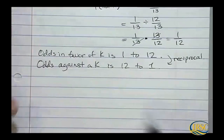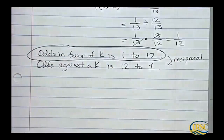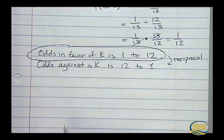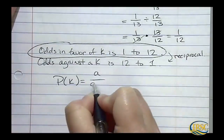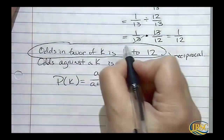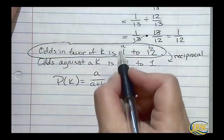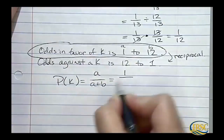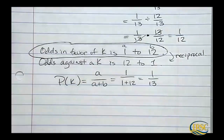We just learned that the odds in favor of a king was 1 to 12. We don't want the odds against — we want the odds in favor for this formula. So the probability of a king should be A over A plus B, where the first number is A and the second is B. That means 1 over 1 plus 12, which is 1 over 13. Which is correct — that's why I want to do this problem. So we got back to the probability of a king, which was 1 over 13.